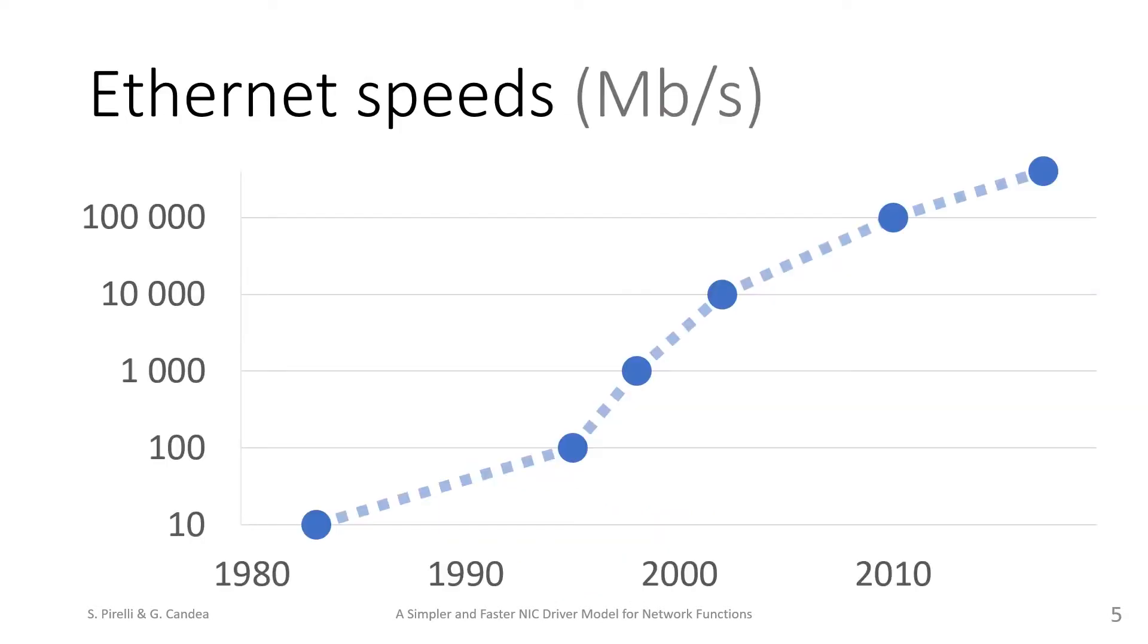The performance aspect is particularly important due to growing internet speeds. Back in 1983, when Ethernet was first standardized as 10 Mbit Ethernet, a machine had 67 microseconds to process each packet, assuming packets arriving at line rates and of the smallest possible size.